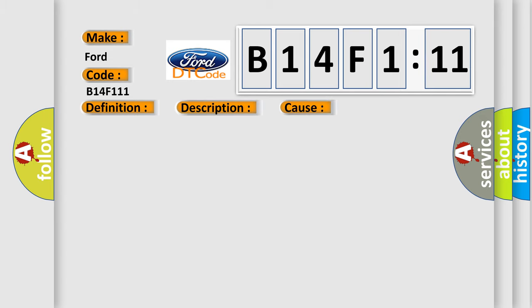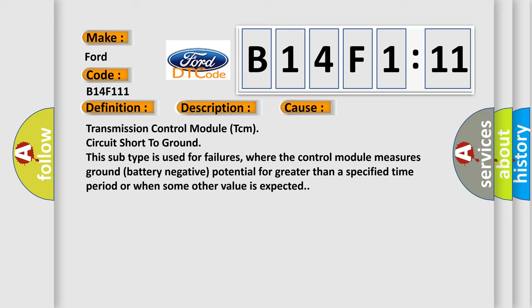This diagnostic error occurs most often in these cases: Transmission control module (TCM) circuit short to ground. This subtype is used for failures where the control module measures ground battery negative potential for greater than a specified time period or when some other value is expected.